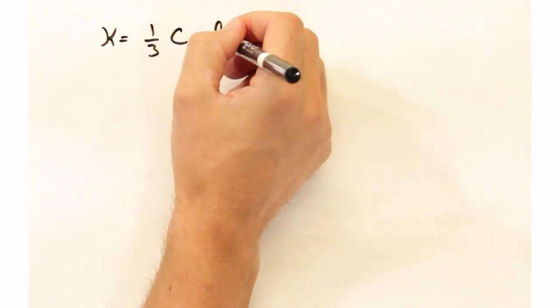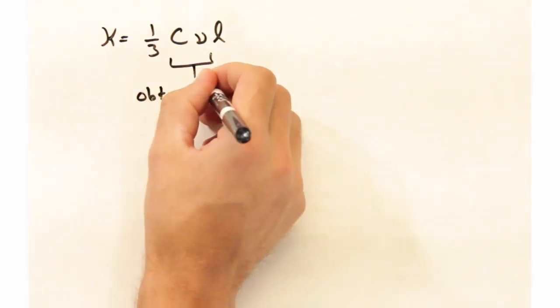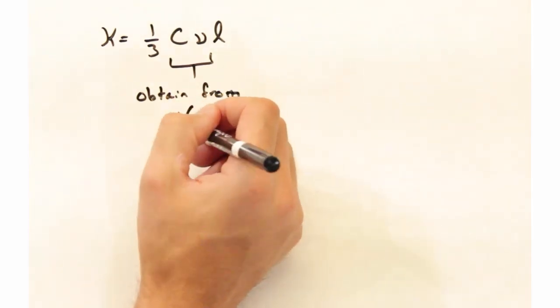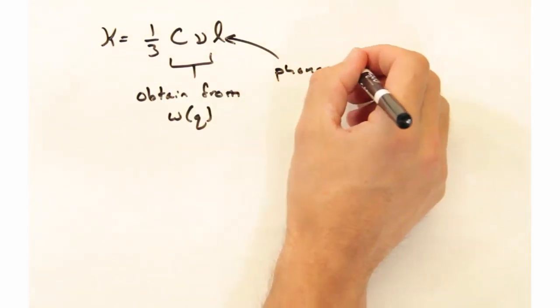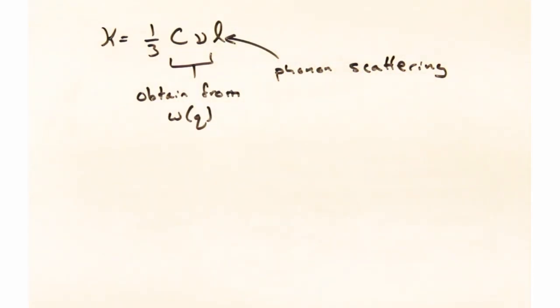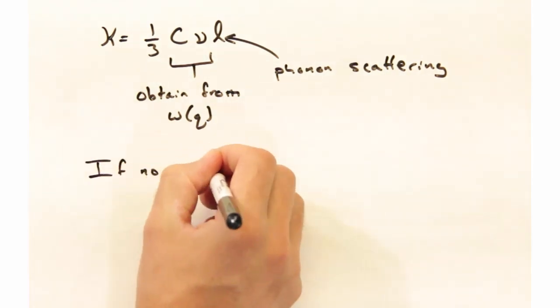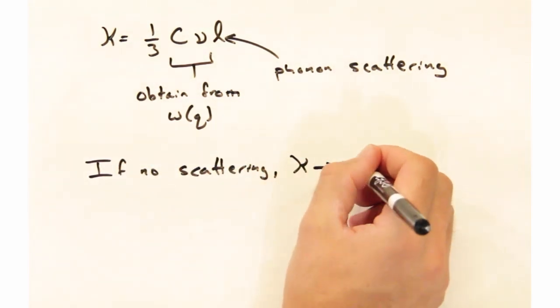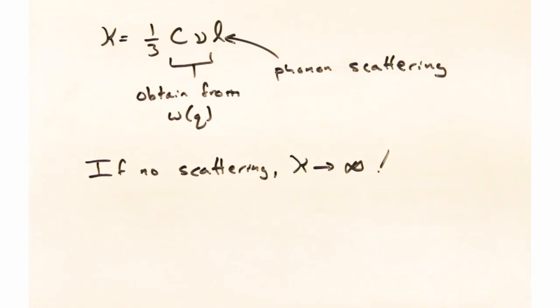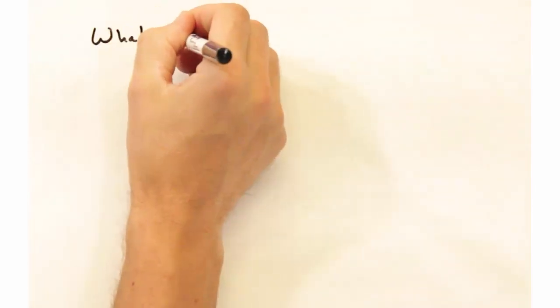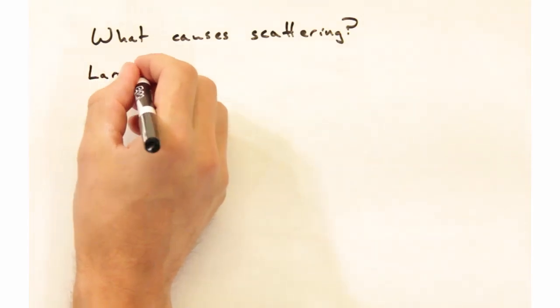Denoting thermal conductivity as kappa, we see that two of the terms we can directly get from the dispersion: the heat capacity and the velocity. However, this l term is kind of a big mystery right now. The first thing you can see is that if you don't have any scattering, then your thermal conductivity goes to infinity. So scattering must be present in all materials. Very briefly then, let's consider what causes scattering.